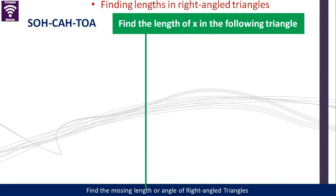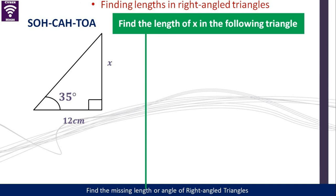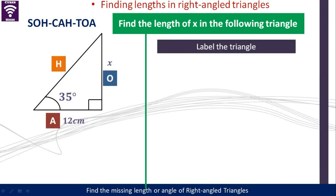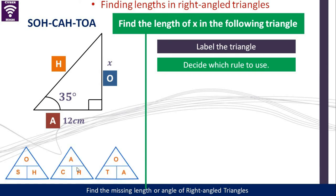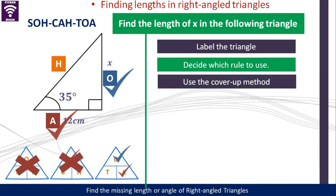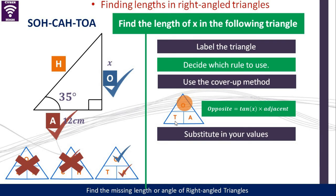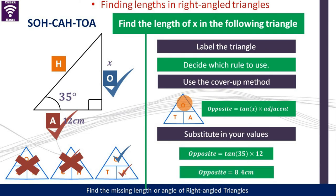How can we use trig ratios to find the length? Let's look at this first scenario. We label it: hypotenuse, adjacent, and the opposite side. We have the adjacent, so we tick where the adjacent is. Now we have to find the opposite, so we tick where O is — that eliminates sine, and it simply means we are going to use the tangent rule. Using the tangent rule, we say the tangent of 35 is equal to the opposite over the adjacent. The opposite side is equal to the tangent of 35 multiplied by the adjacent. After substituting our values, the answer is 8.4 centimeters. Remember, our starting point is to label, then decide which rule to use.